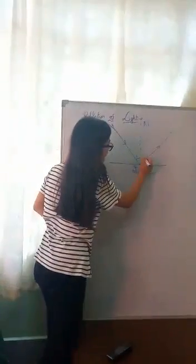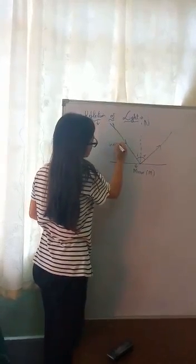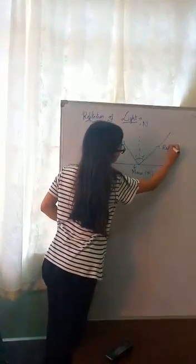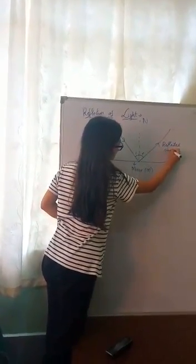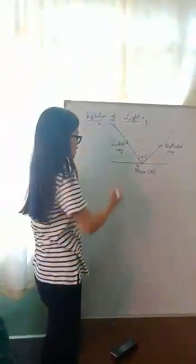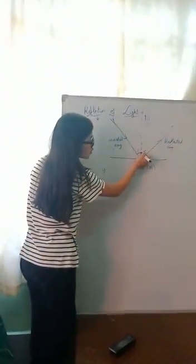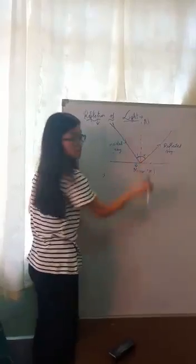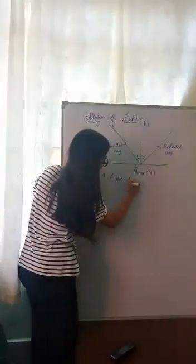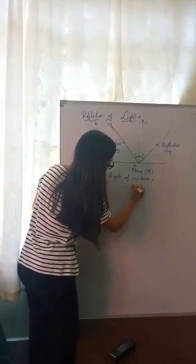This is the angle of incidence, this is the angle of reflection, this is the incident ray, and this is the reflected ray. This is the normal. From this diagram, we have two laws of reflection. Number one: the angle of incidence is equal to the angle of reflection.